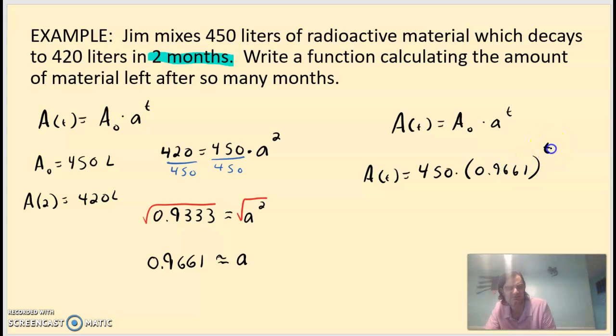If I plug two in for t, I should get something relatively close to 420, maybe not exactly since I rounded. But if I wanted to know how much I'd have at the end of the year, I'd plug in 12. Make sure you understand here that t is in months. If they just came back and asked you a question, what do we have after five years, don't plug in five, since the way we calculated it, we did it in months. So we just need to be consistent there. We'll do some other types of problems in a little bit.